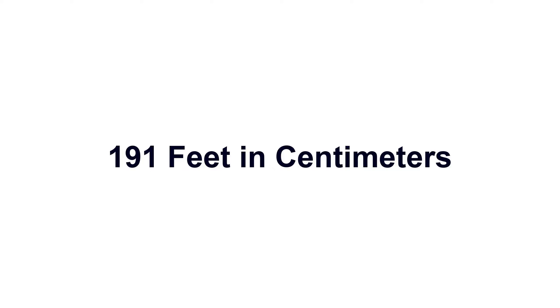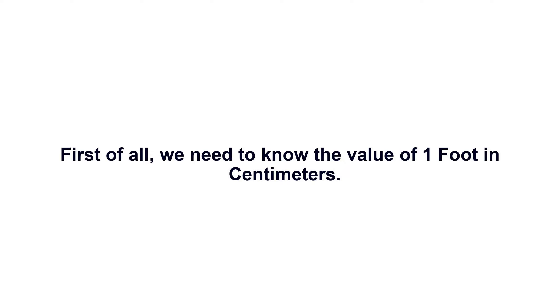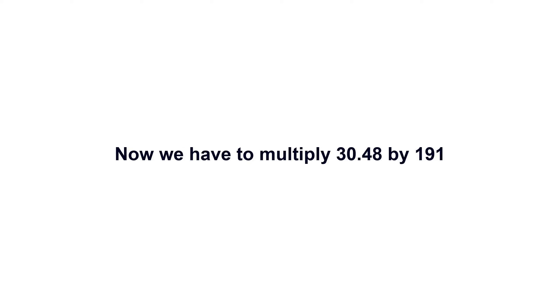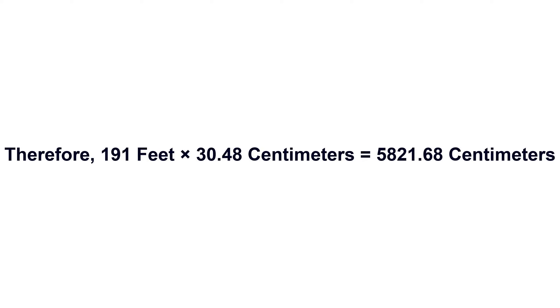191 feet in centimeters. First of all, we need to know the value of one foot in centimeters — one foot equals 30.48 centimeters. Now we have to multiply 30.48 by 191, therefore 191 feet times 30.48 centimeters equals...